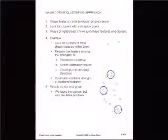Here you're really seeing the asymmetry aspect. What we're trying to do on the next slide is see what we can do with this grouping of small shape features. It is observed that the shape features seem to cluster around the cancer, so you can look for shape features in certain clusters or within certain distances of the breast boundary. We can look for clusters with a distance query. In this case we're looking for clusters of three shape features within two millimeters of each other.